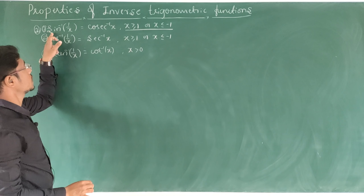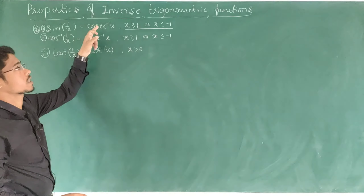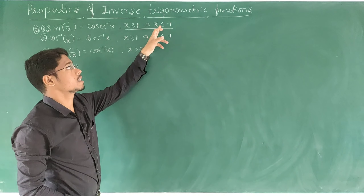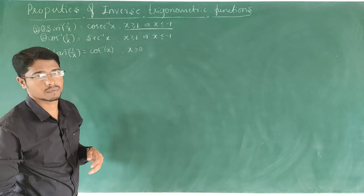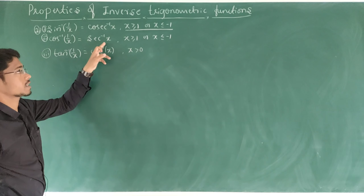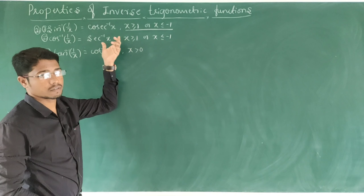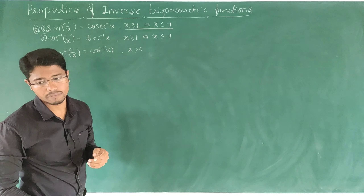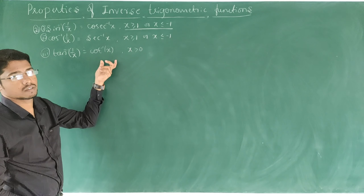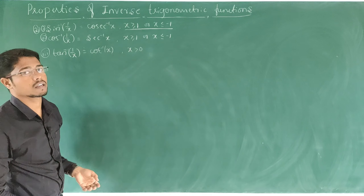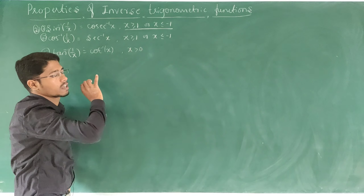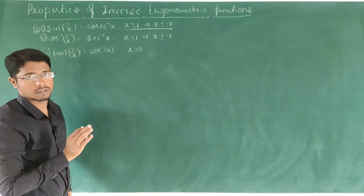Property number 1: sin inverse of 1/x is equal to cosec inverse of x, when x is greater than or equal to 1 or x is less than or equal to minus 1. Second: cos inverse of 1/x equal to sec inverse of x, also when x ≥ 1 or x ≤ -1. And tan inverse of 1/x equal to cot inverse of x, when x is greater than 0. These properties work on these intervals only; other than these intervals, they do not work.